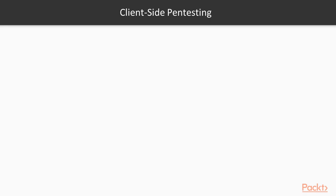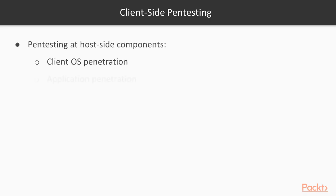Next is client-side pentesting. For example, in an office space where all the employees are working, those are the clients — they have their operating systems. If a pentester is trying to exploit their operating system at the client-side, that is considered client-side pentesting. Application pentesting: if applications or software are running on a client system and the pentester is trying to exploit those.